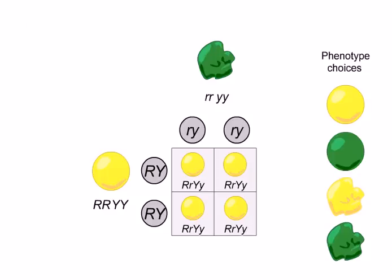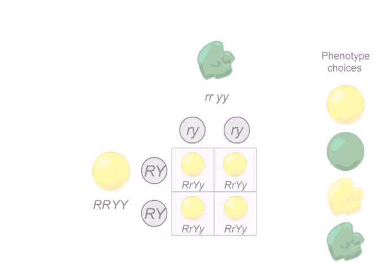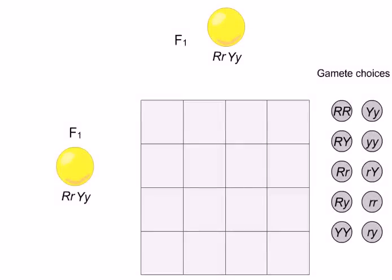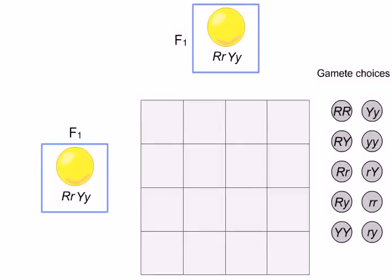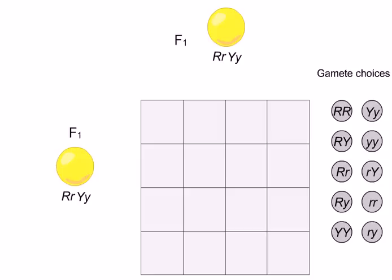In our cross, notice that all of the F1 individuals show the dominant yellow and round phenotypes. The recessive alleles in this generation are present, but the dominant alleles mask the recessive phenotype. If we mate F1 individuals to each other or allow them to self-pollinate, what kinds of offspring would you expect? Begin by dragging the correct gametes to the two sides of the Punnett square.